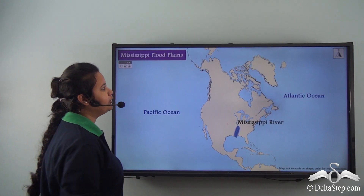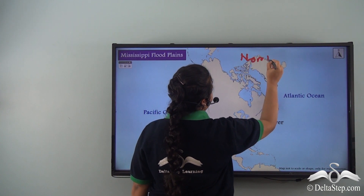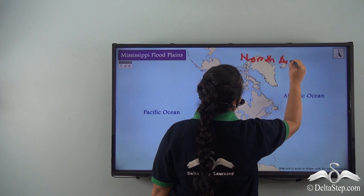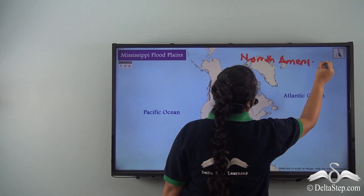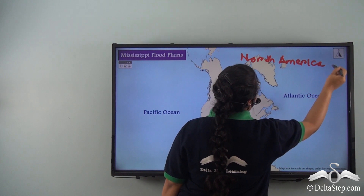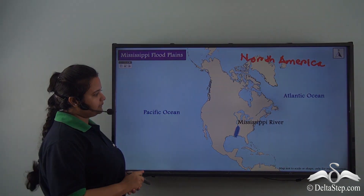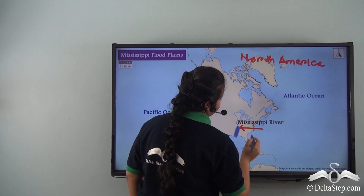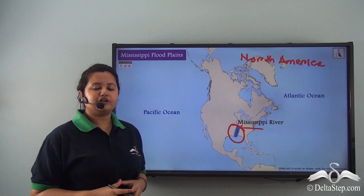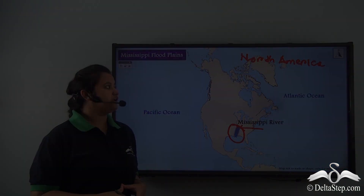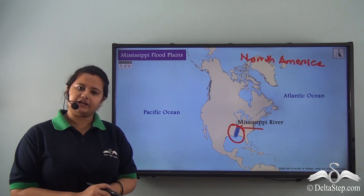Here we have the map of North America. This map shows the location of the Mississippi River floodplain. See here — this is the Mississippi River, and this region is the floodplain formed due to flooding of the Mississippi River. So here we have an example of a floodplain: the Mississippi River floodplain.